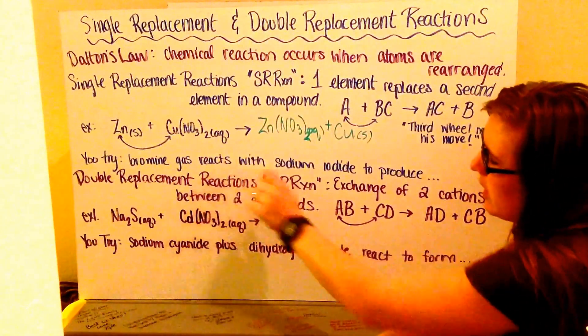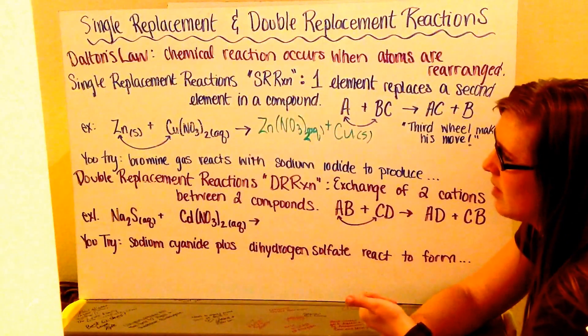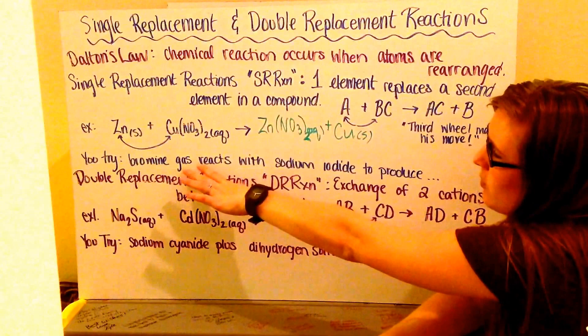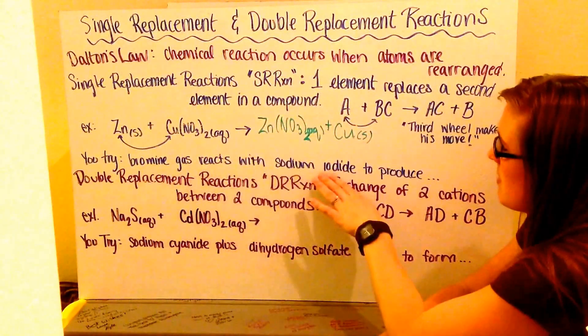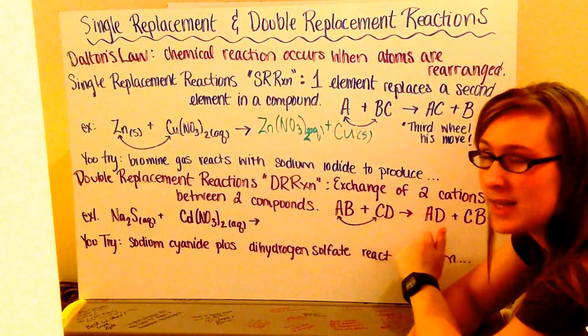Go ahead and try the reaction, first converting names of compounds to their chemical formula, and then determining your products, of bromine gas reacting with sodium iodide, and what it's going to produce. Don't forget your diatomics.